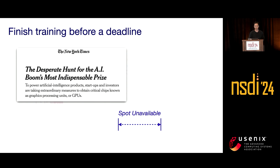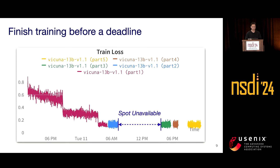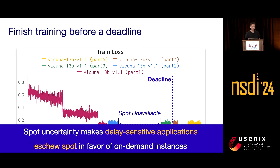A New York Times article says AI companies are having a hard time hunting for GPUs. With all this uncertainty, if you want to finish training before a specific deadline — for example, 6 p.m. — how do we make sure the job can finish by then, such as for an evaluation or release? This uncertainty makes delay-sensitive applications resort to spot instances in favor of on-demand instances.